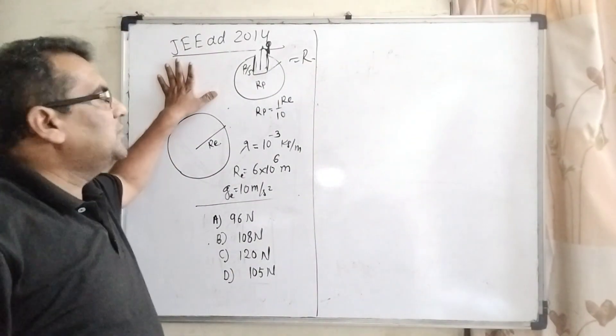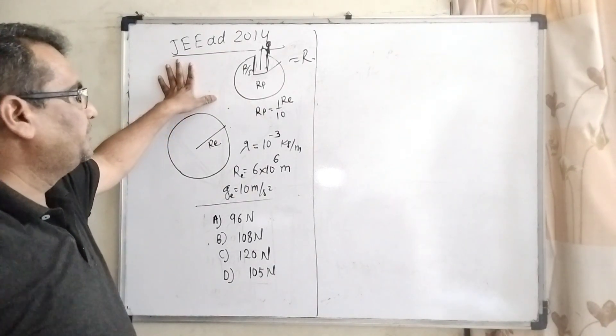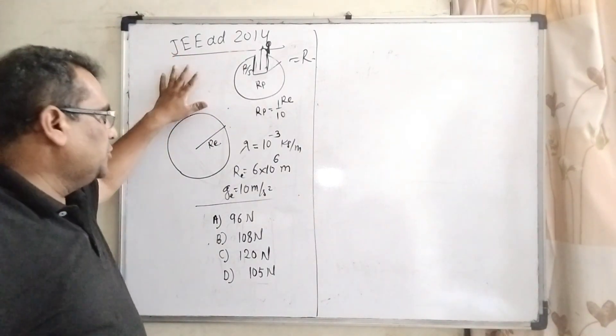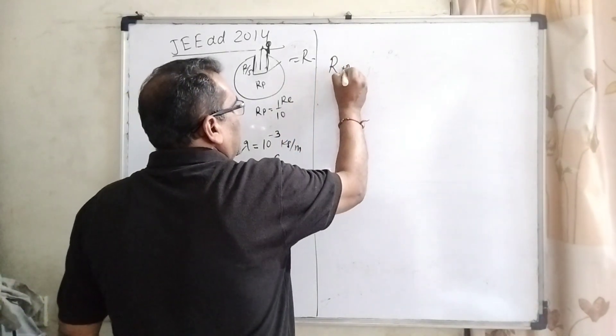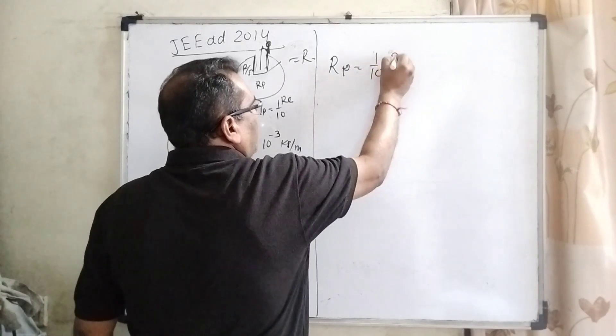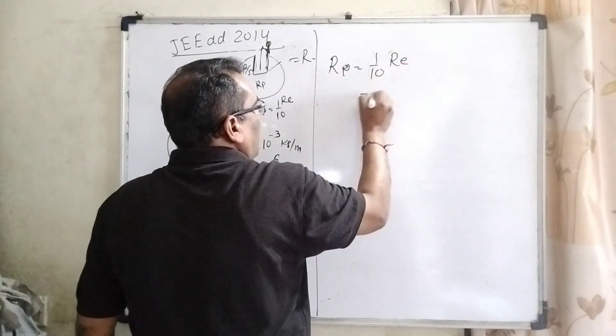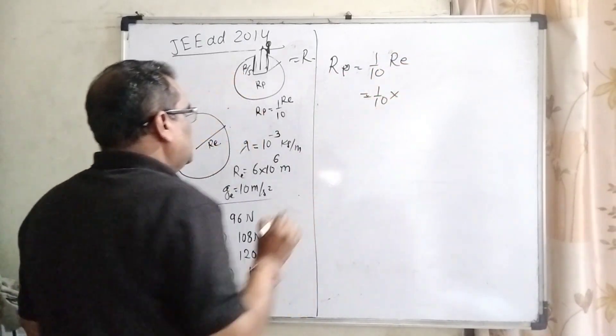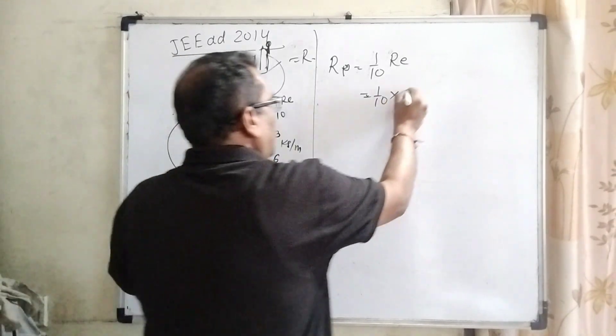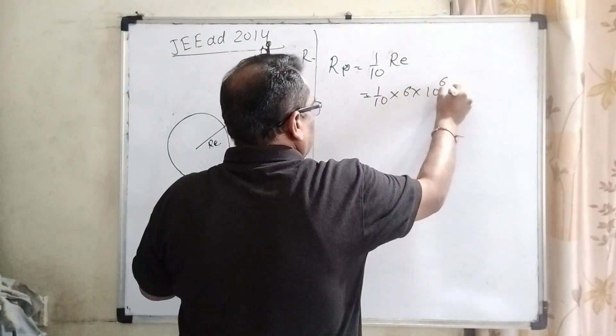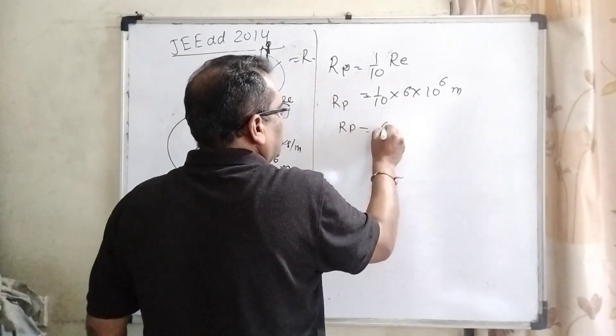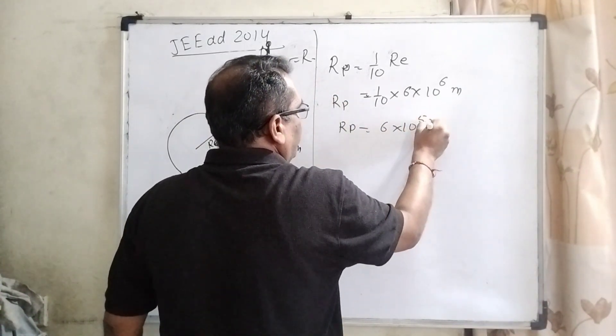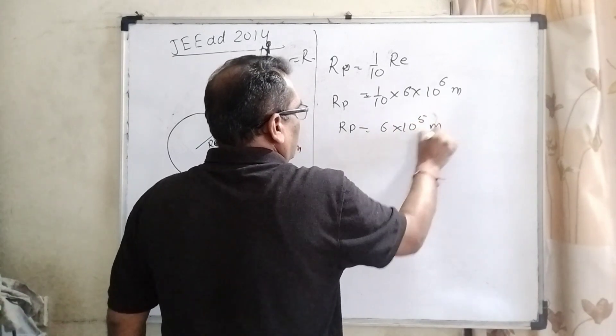This question is asked in JEE Advanced 2014. What the question says: here you have given the radius of planet equal to 1 by 10 of radius of the Earth. What is the radius of Earth? Radius of Earth is 6 into 10 raised to power 6 meter. It means radius of planet is given 6 into 10 raised to power 5 meter.